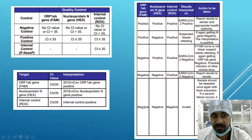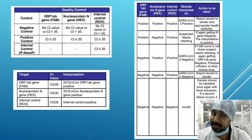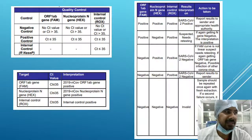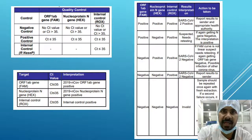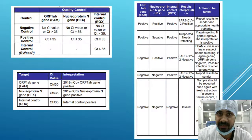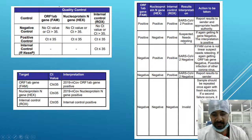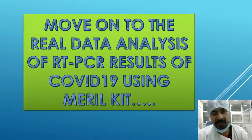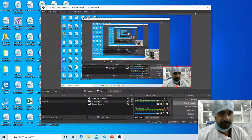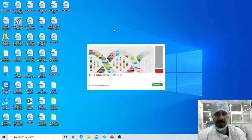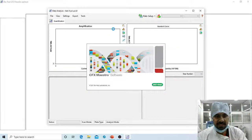If ORF1ab is negative, N gene is negative, and ROX is also negative, that is an invalid test. ROX cannot be negative — if it is, something is wrong with the test. It may be that someone sent plain VTM to the lab without extracting the sample from the patient. That result is invalid. Next I will show you through the CFX software how the results are declared.